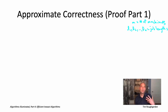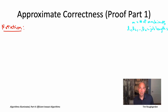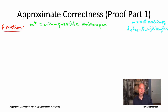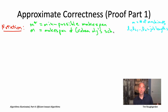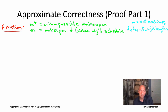Let me introduce some notation for the two quantities we really care about for this approximate correctness guarantee. We care about the minimum possible makespan, which we'll call capital M star, and the makespan of the schedule produced by Graham's algorithm, which we'll call capital M. The whole point of this proof is to show that capital M is not too much bigger than capital M star — specifically, bigger by at most a factor of quantity 2 minus 1 over little m.